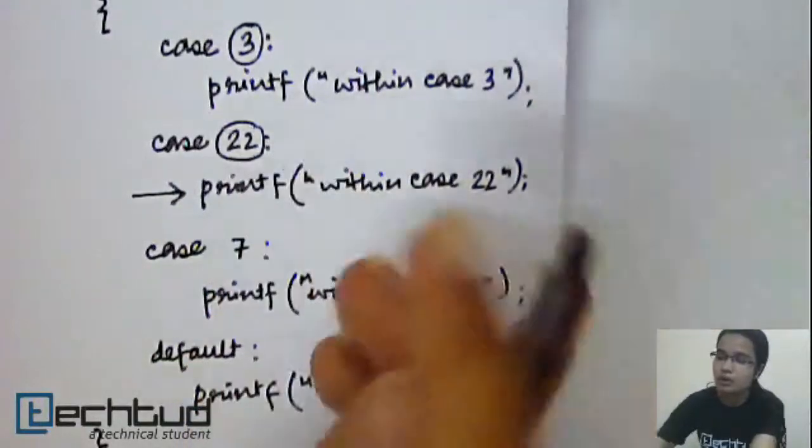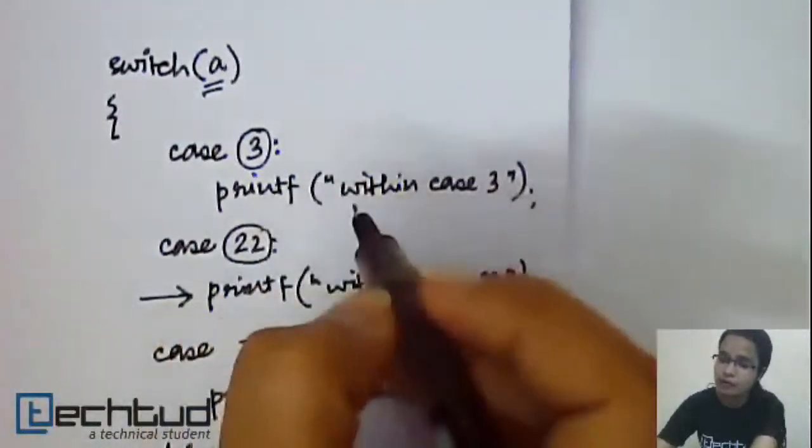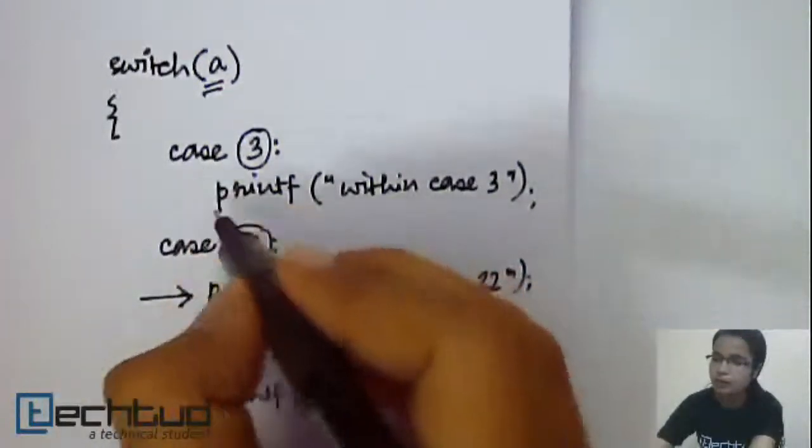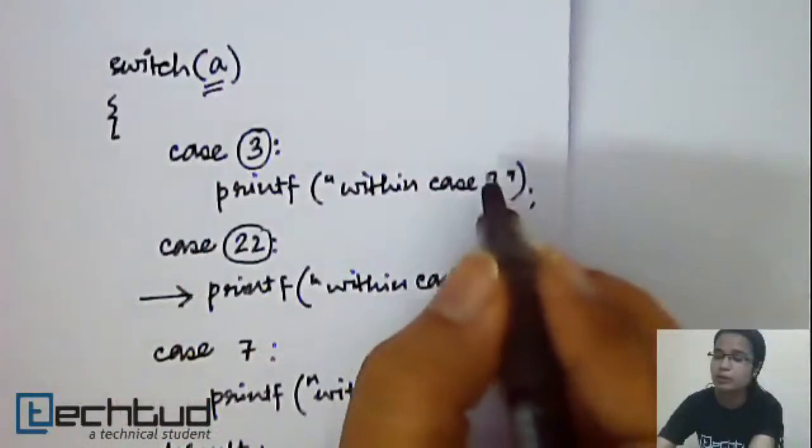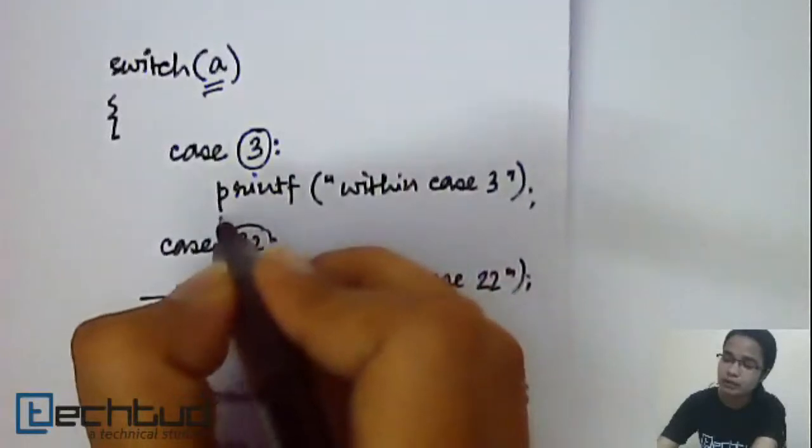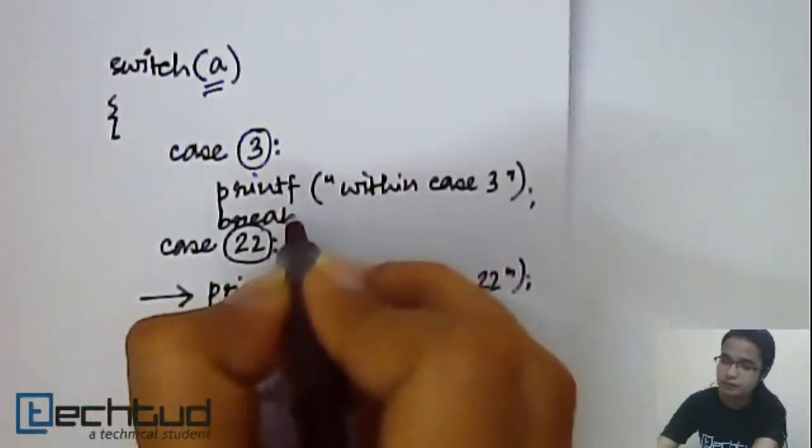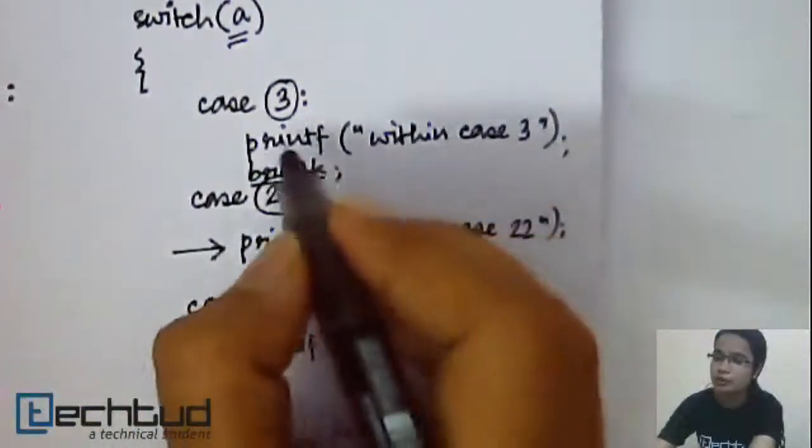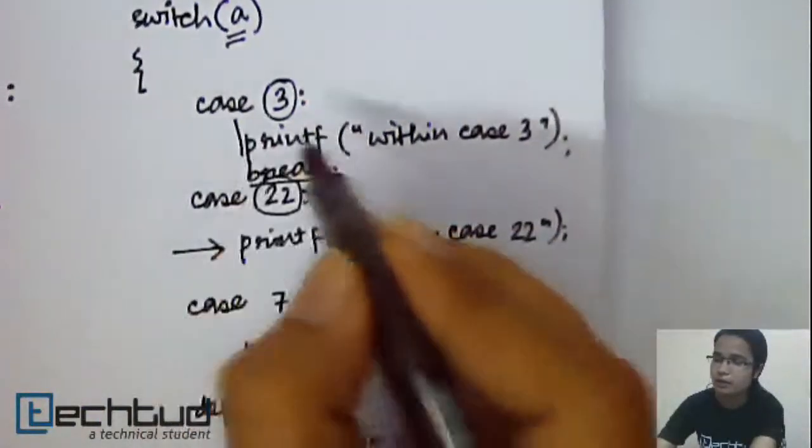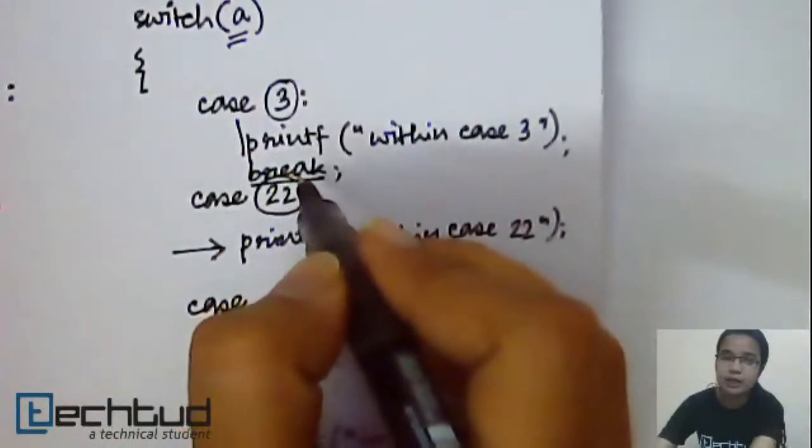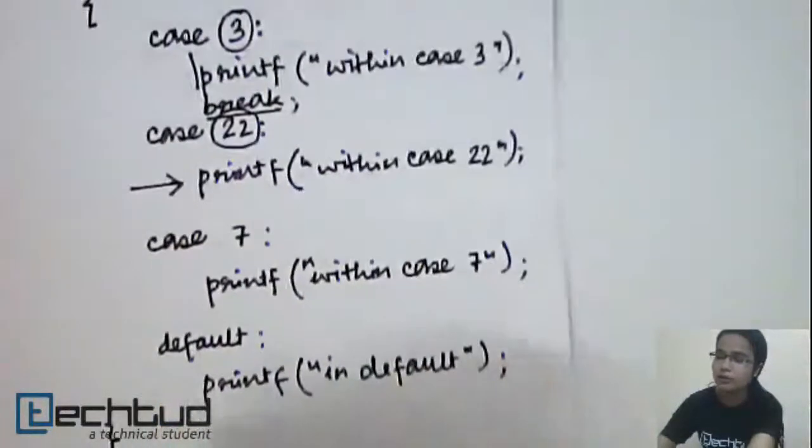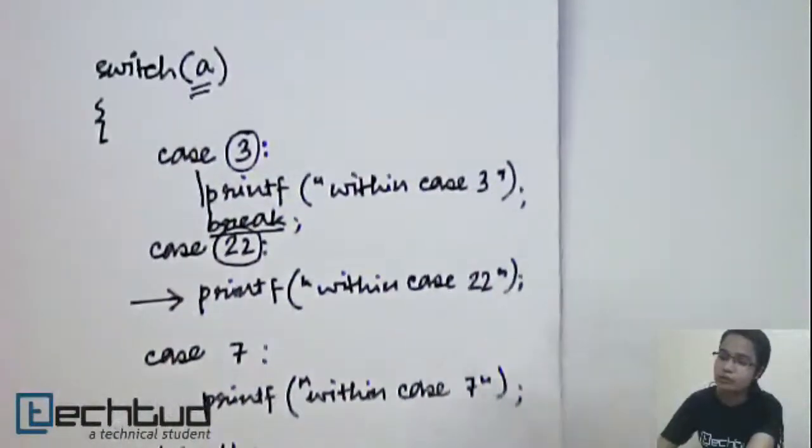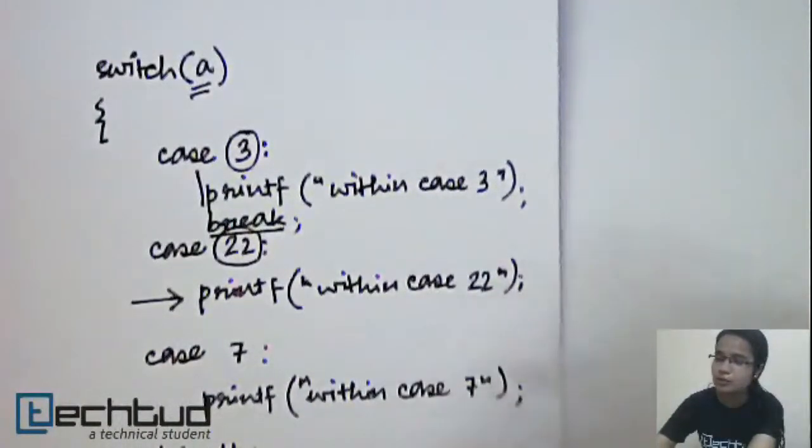So what we need to do is, after execution of each statement, particular statement in a particular case block, we need to write break. So what this break will do? It will evaluate this statement, and then the control will break from here to the end of switch. So the control will come to the end of switch. So none of the other statements will be executed.